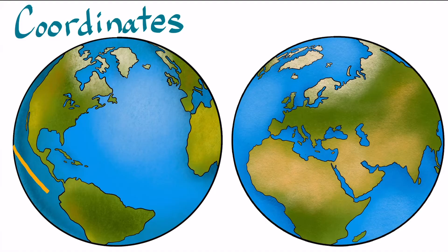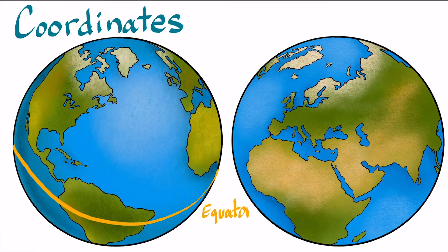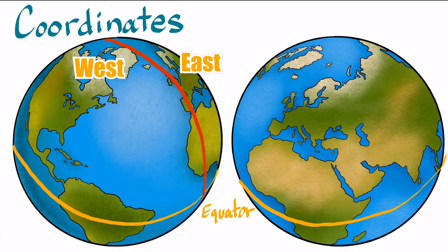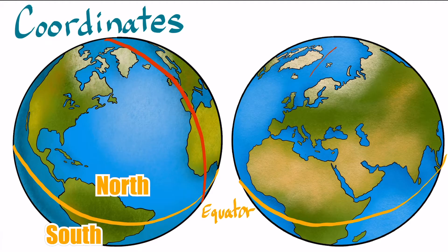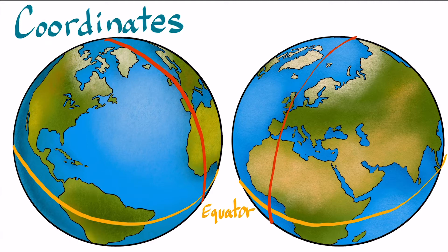In this History Illustrated video we're going to discuss how using lines of latitude and lines of longitude will allow you to locate something anywhere on the Earth. Earlier we discussed how meridians measure things east and west of the prime meridian, and how parallels measure things north or south of the equator. Since the Earth is basically a sphere shape, we can divide it into 360 degrees, just like you would do in a math class.